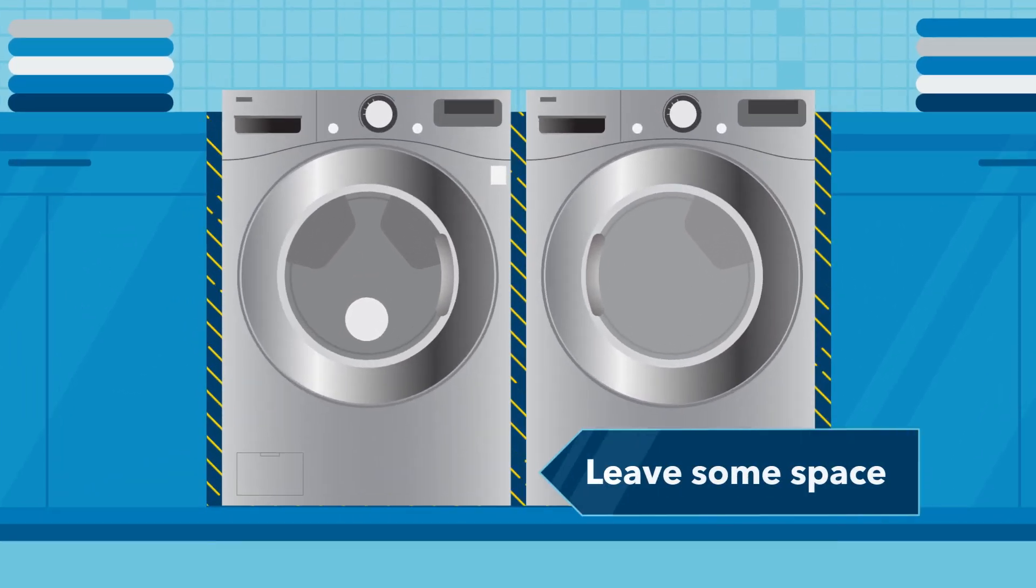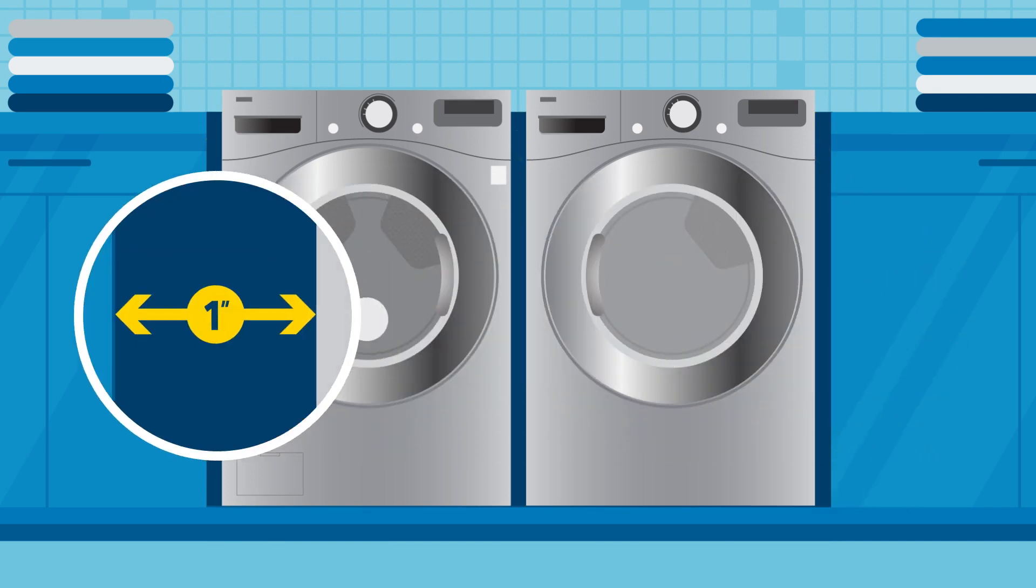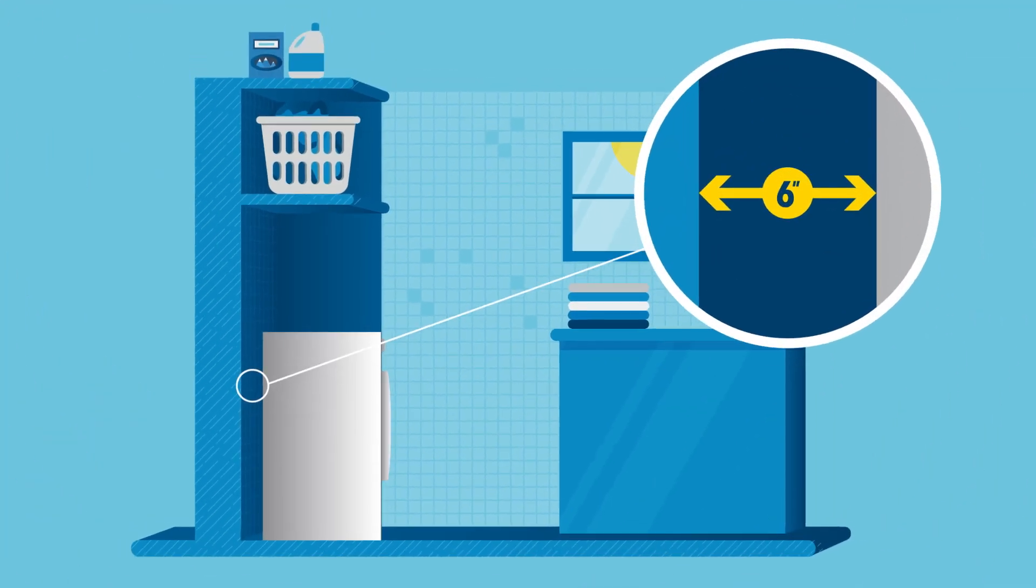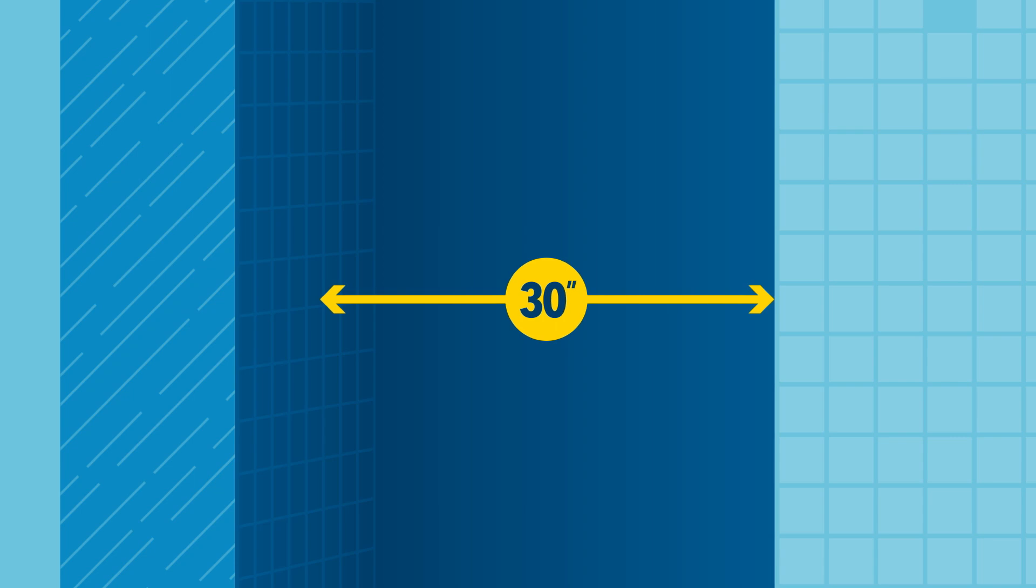You also need to leave a little breathing space so your washer and dryer stay properly ventilated. Allow for an inch of space on each side and a six inch gap between the appliances and your back wall. Deduct these measurements from your available space to come up with the final dimensions.